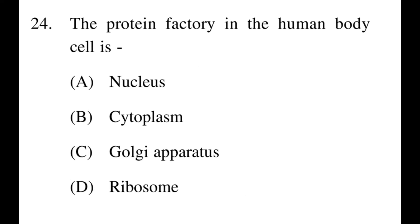Next question: The protein factory in the human body cell is? Options: A: nucleus, B: cytoplasm, C: Golgi apparatus, D: ribosome. The right answer is D, ribosomes. Ribosomes are known as the protein factory of the cell, meaning they have the most protein.